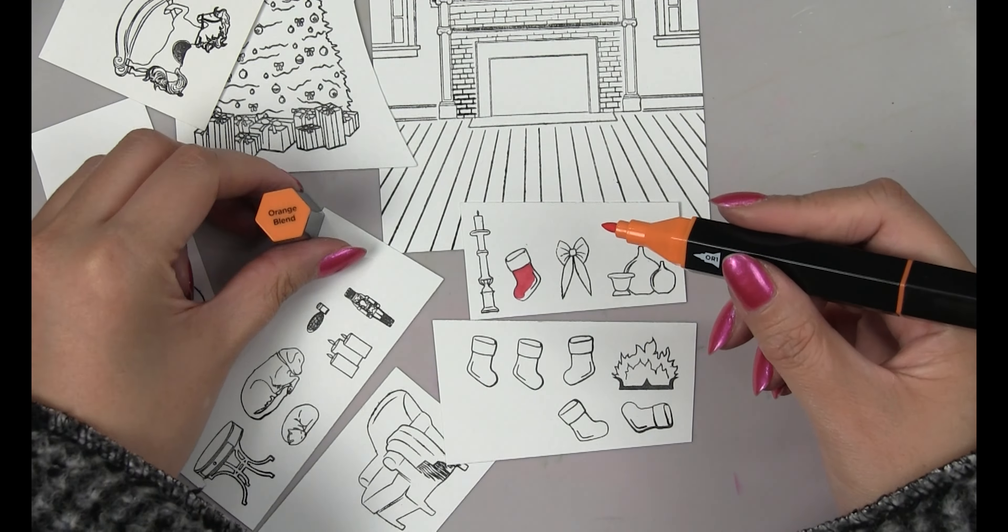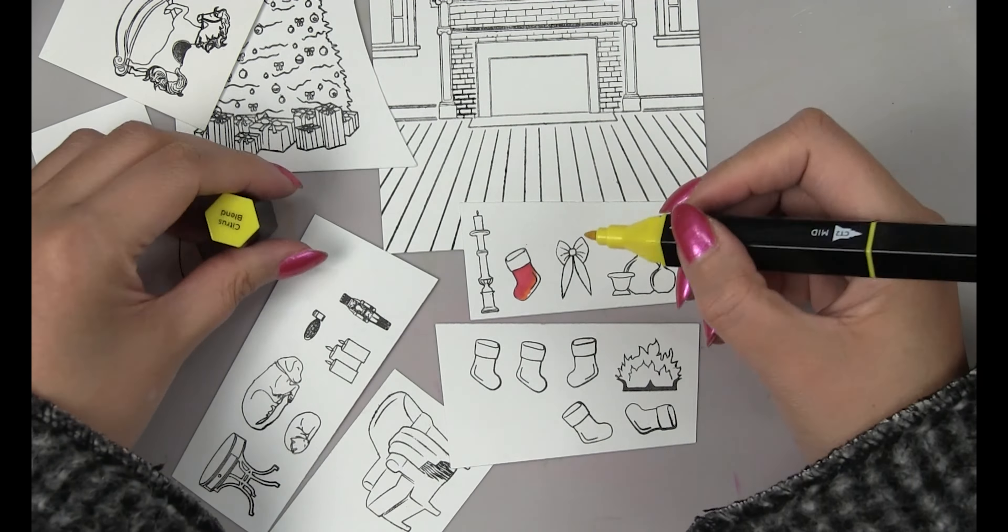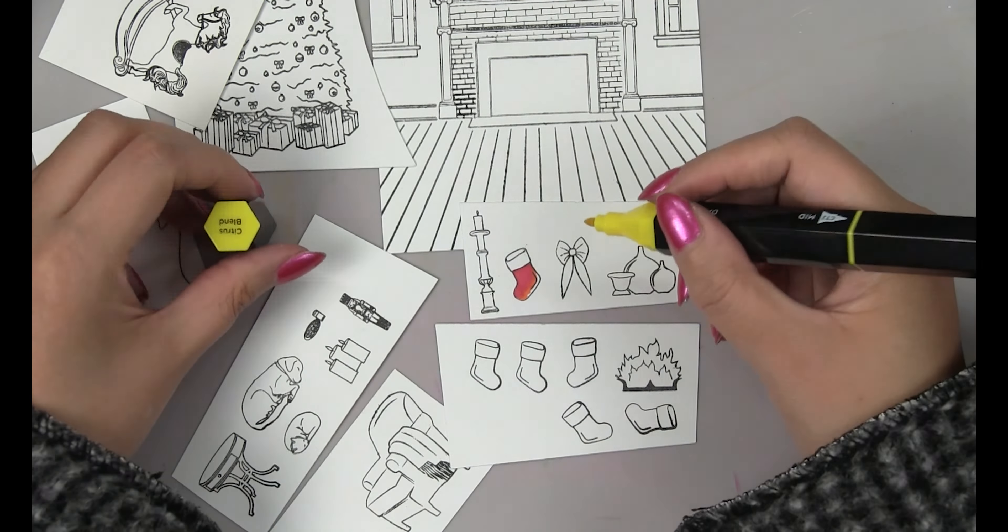So this is the dark red blend and I started off with the lighter red, then orange and yellow on the stockings. The reason why I'm adding the orange and yellow glow to the bottom edge of the stockings is because I want to add the glow from the fireplace. That's how I color in all of the stockings.